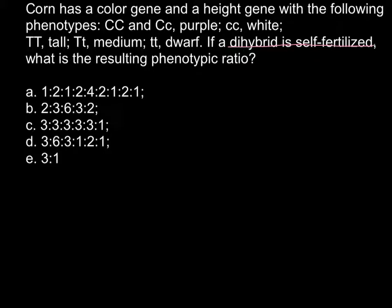What does that mean? We have two genes here: one is gene C and another is gene T. One stands for color and another stands for the height of the plant. Both of them would be heterozygous because dihybrid means two different alleles.